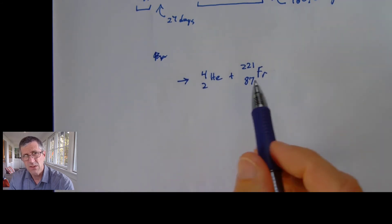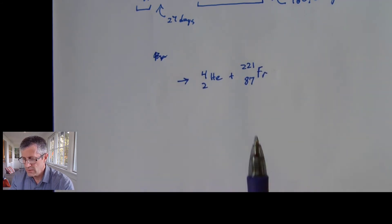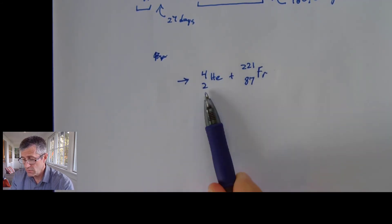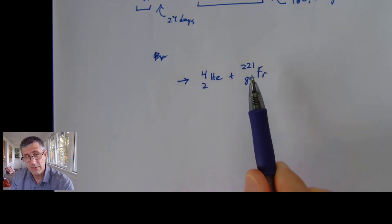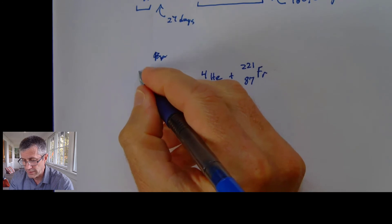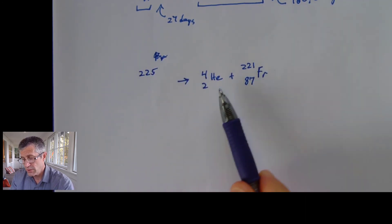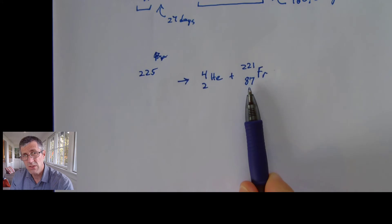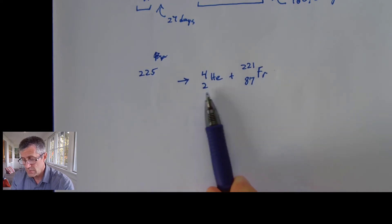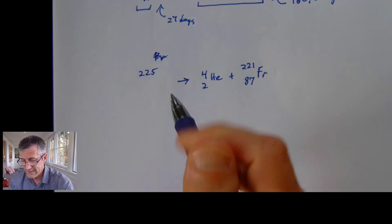So let's take a look. So I'm going to do the same idea. So I'm going to make sure that my mass adds up and my charge adds up. So in this case, I ended up with a mass of 221 and 4. So whatever I start with must have had a mass of 225. I ended up with a charge of plus 87 and plus 2. So I must have started with something that had a charge of 89.